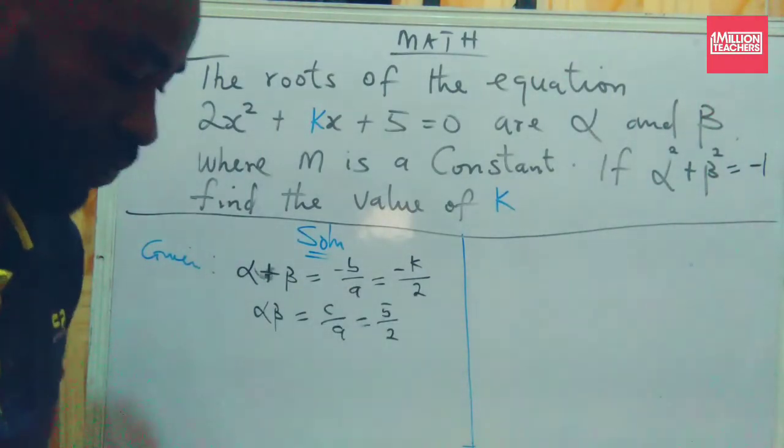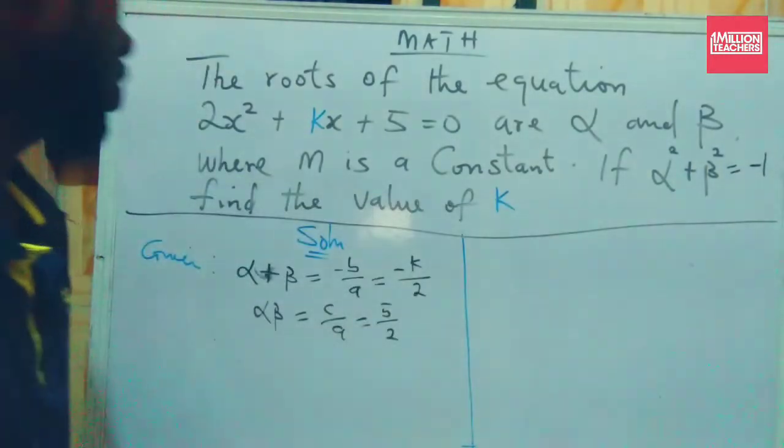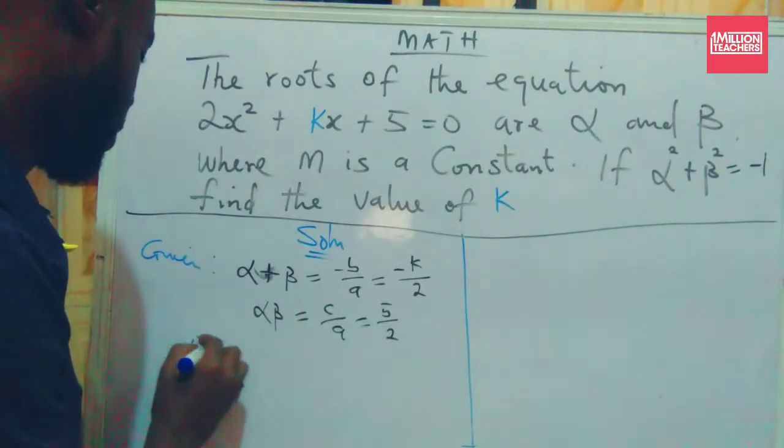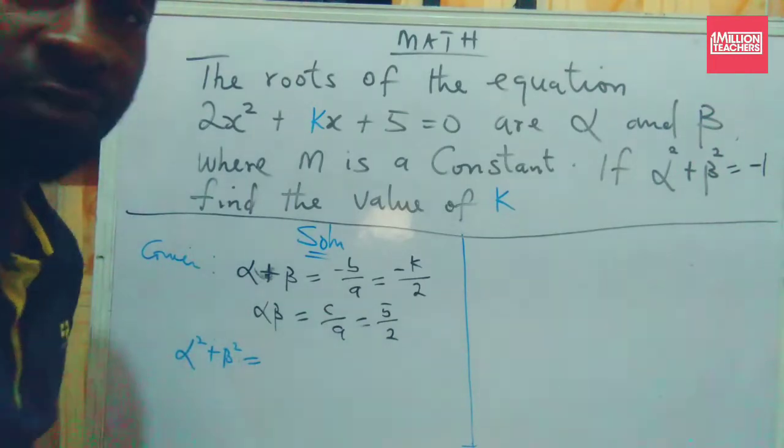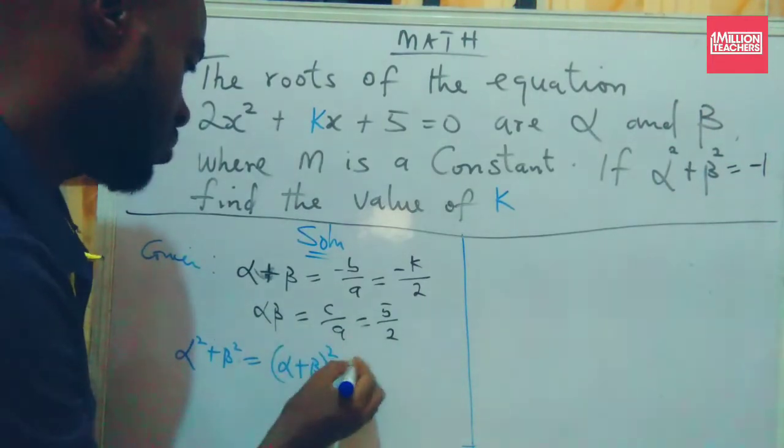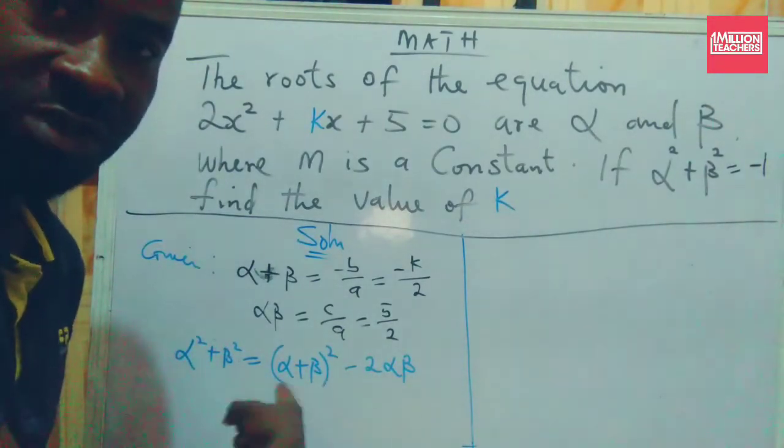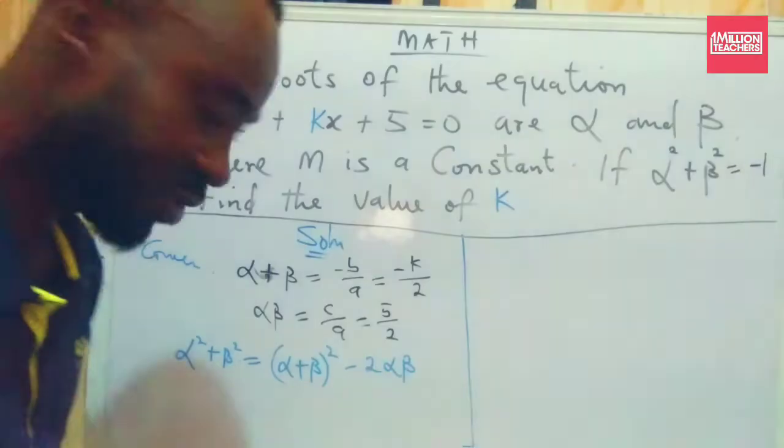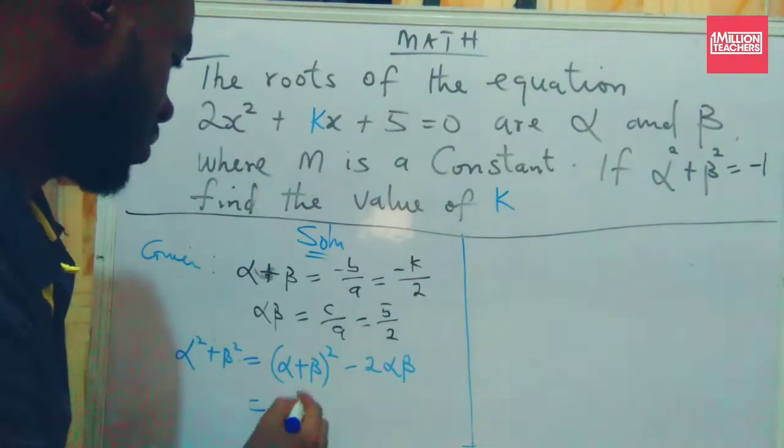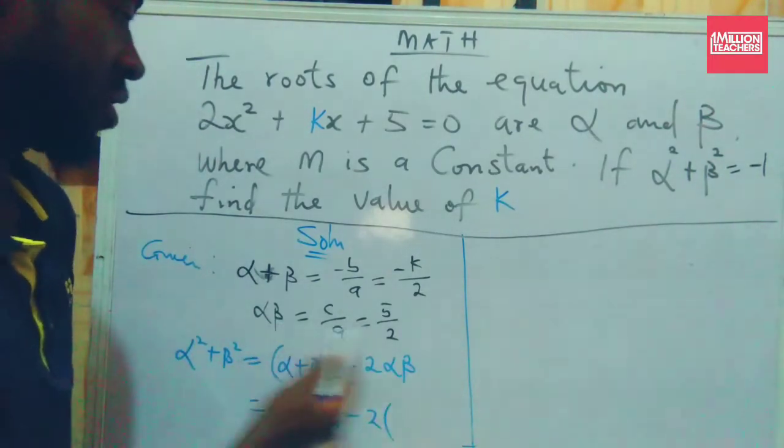Now they are asking if alpha² + beta² = -1, find the value of k. Recall that alpha² + beta² from our identity is also equal to (alpha + beta)² - 2 alpha beta. So alpha plus beta is given to us from our formula as -k/2, all squared, minus 2 alpha beta. Our alpha beta is 5/2.